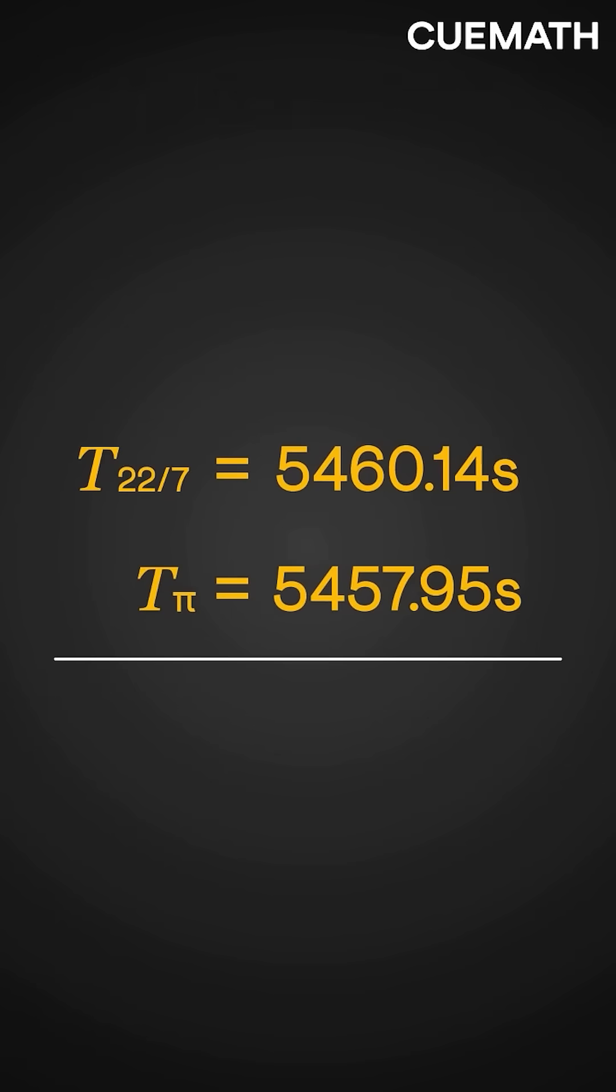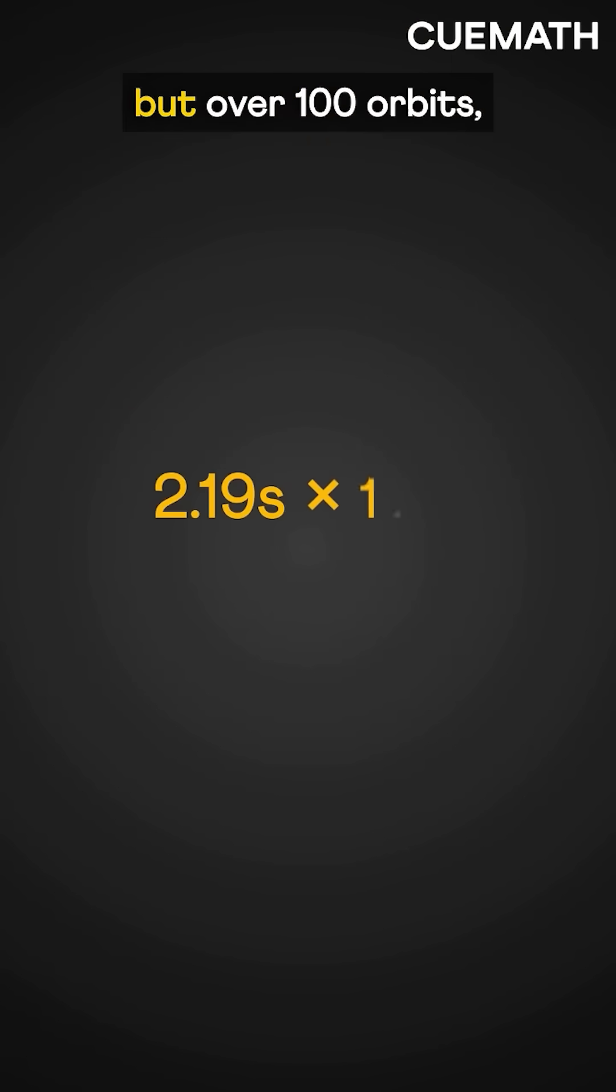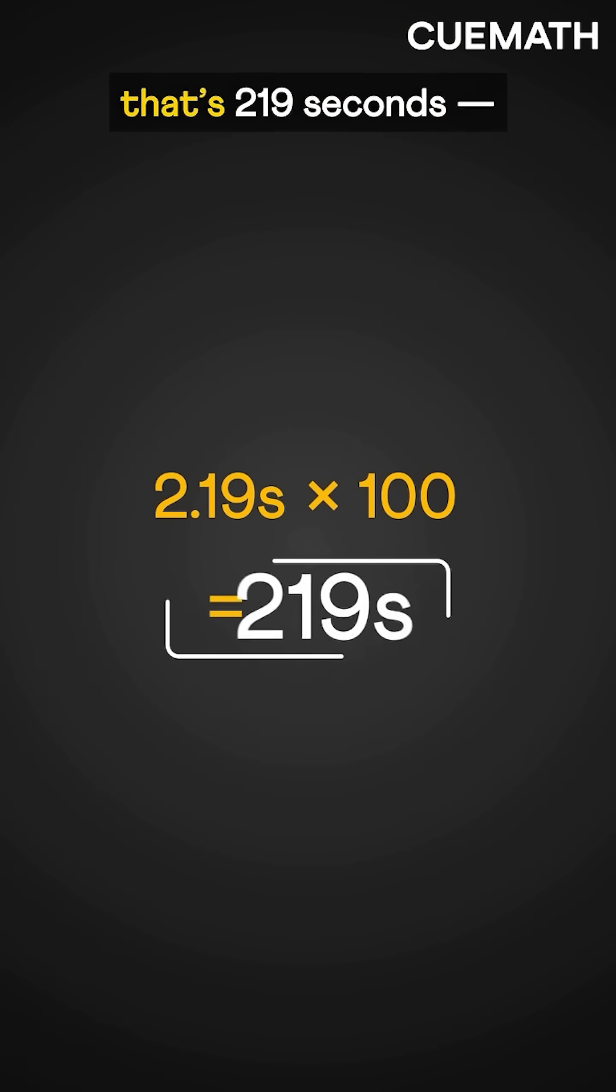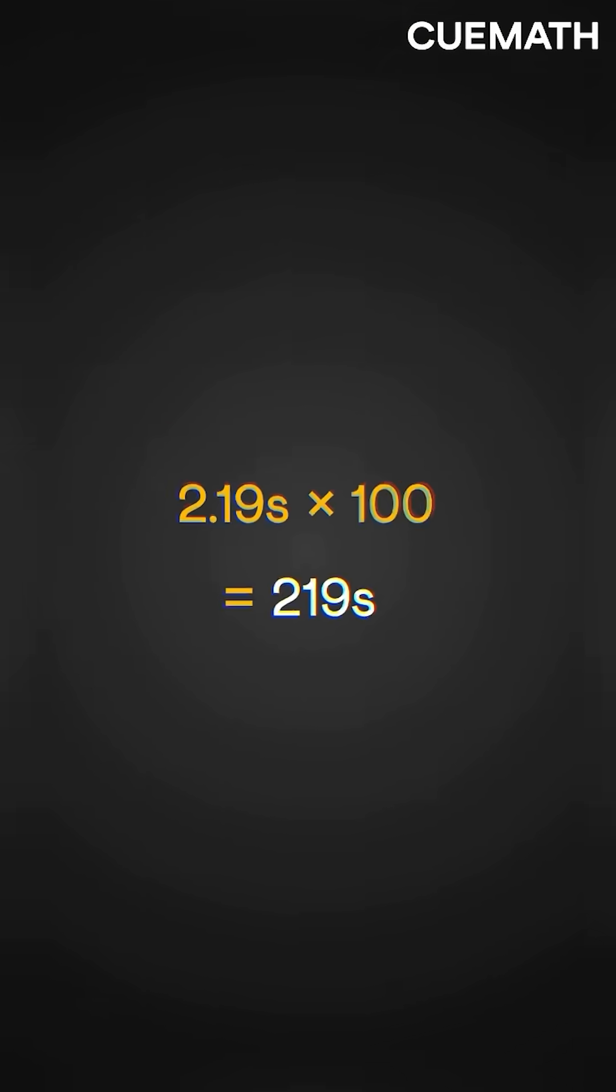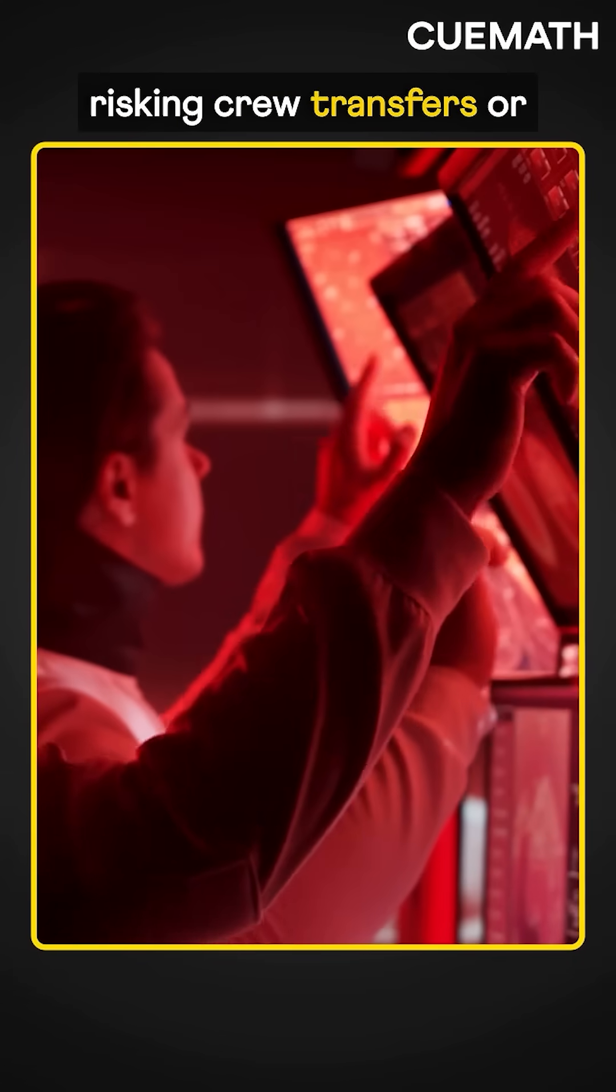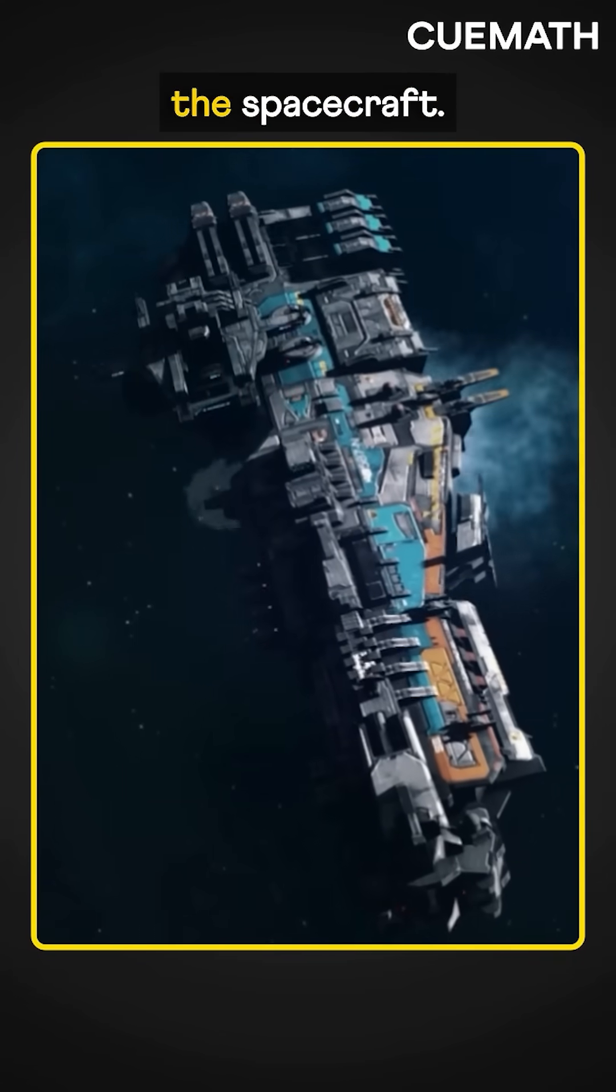Using 22 over 7, there's a 2.19-second gap. It seems small, but over 100 orbits, that's 219 seconds. Enough to cause docking issues, risking crew transfers, or even damage to the spacecraft.